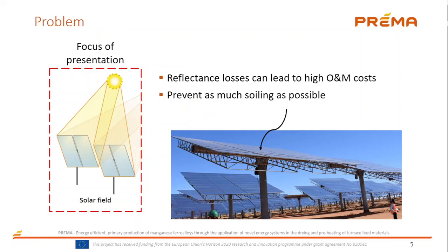More specifically, its solar field. The performance of the solar field largely dictates the performance of the concentrating solar thermal plant, and the performance of the solar field is mostly determined by the reflectance losses resulting from dust deposition. It is thus important to prevent as much soiling as possible, which is the focus of this work.